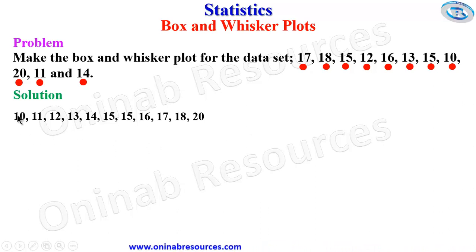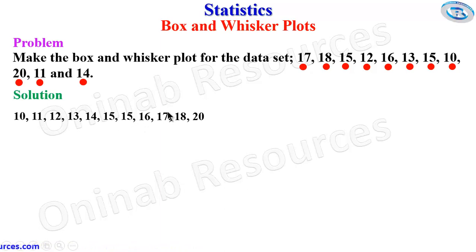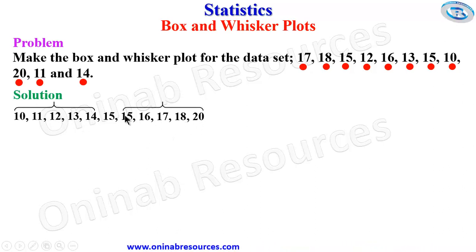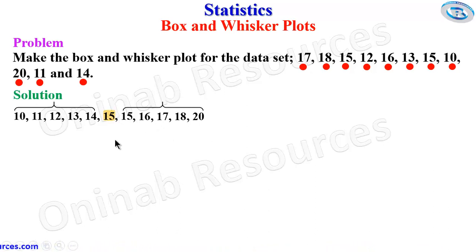Now we count: 1, 2, 3, 4, 5, 6, 7, 8, 9, 10, 11. So we have 11 items. If we pick the first five and the last five, we can see that 15 is in the middle — so we call it the median.